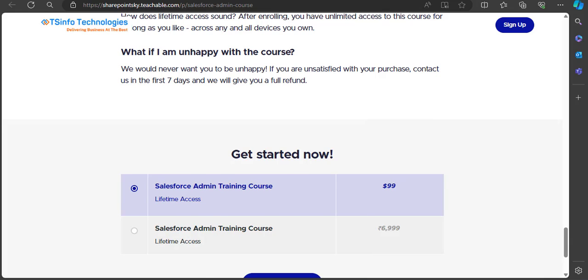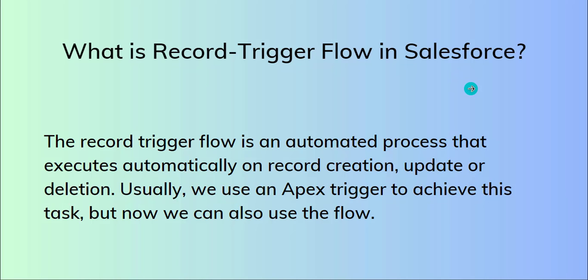Let's jump to the topic. We need to understand what is record trigger flow in Salesforce. The record trigger flow is an automated process that executes automatically on record creation, update, or deletion. Usually we use an Apex trigger to achieve this task, but now we can also use flow to achieve this requirement.